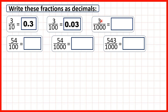Now we have three thousandths. That's 0.003, because the third digit after the decimal point is the thousandths digit and we have three thousandths. So we need zeros in our ones, tenths, and hundredths to show that the three represents three thousandths.